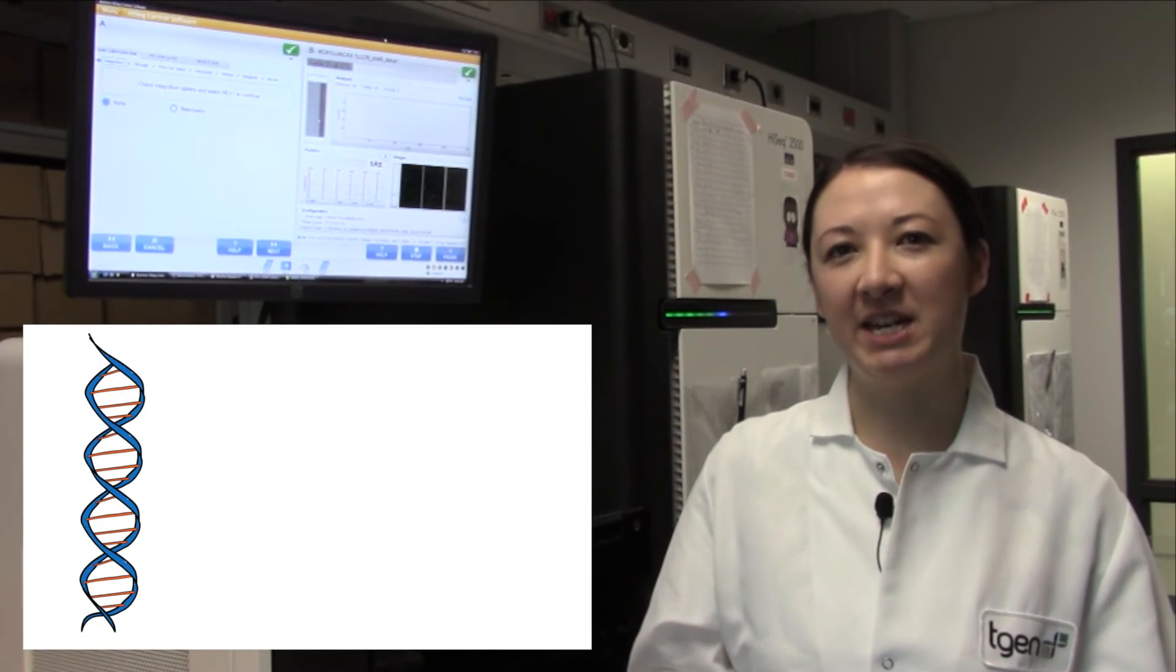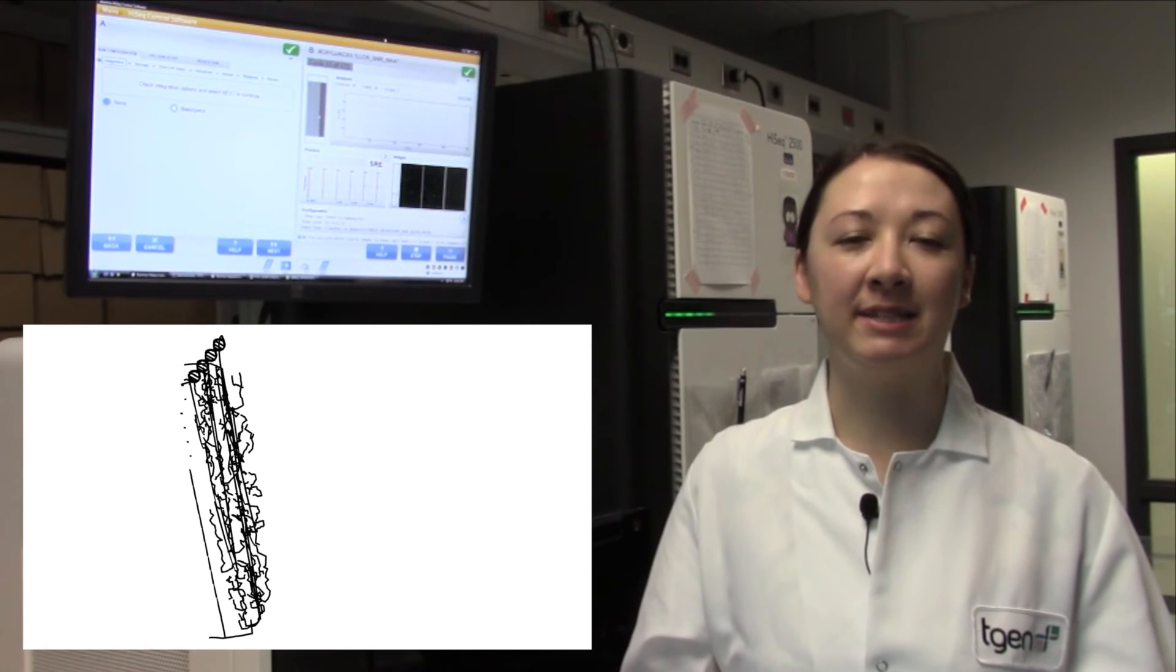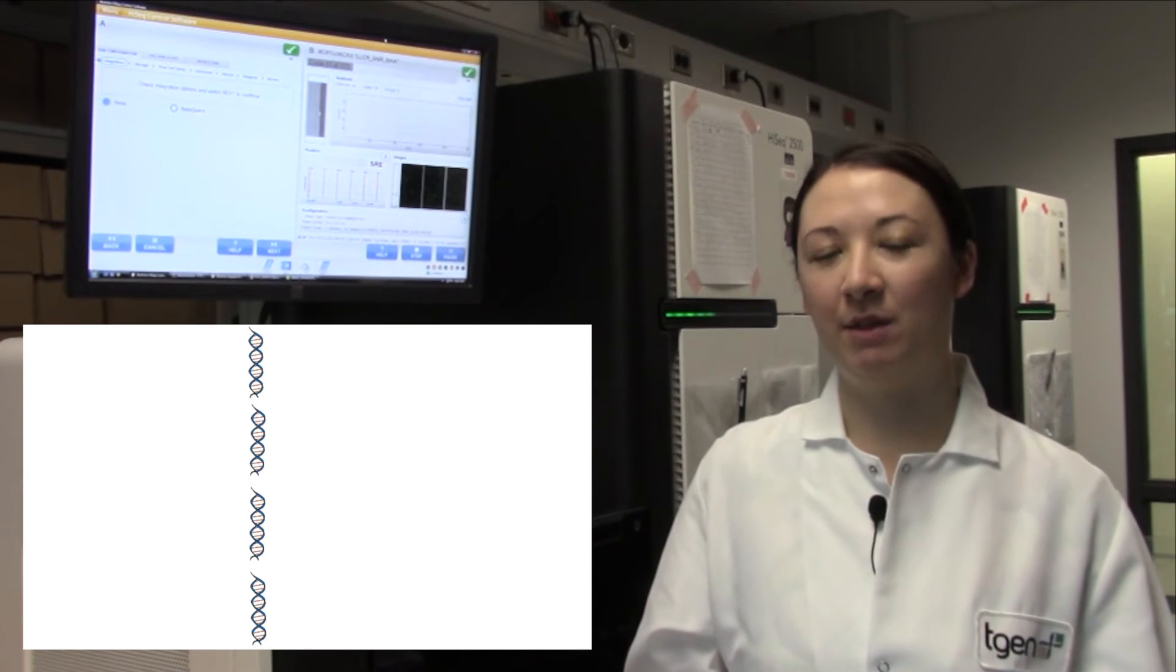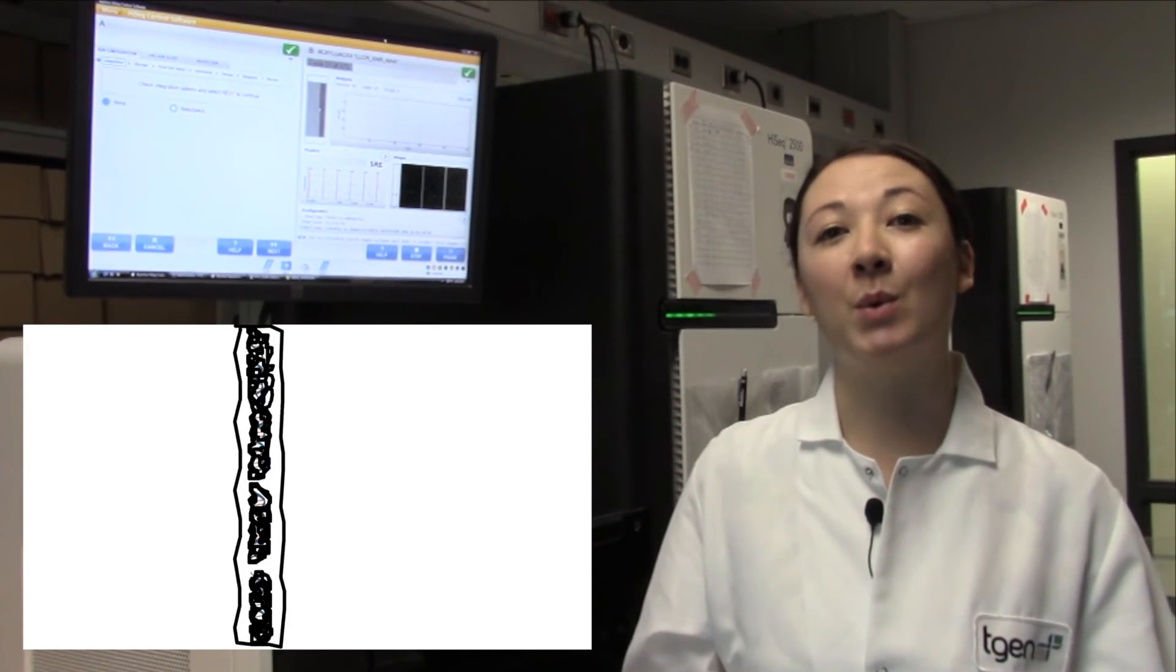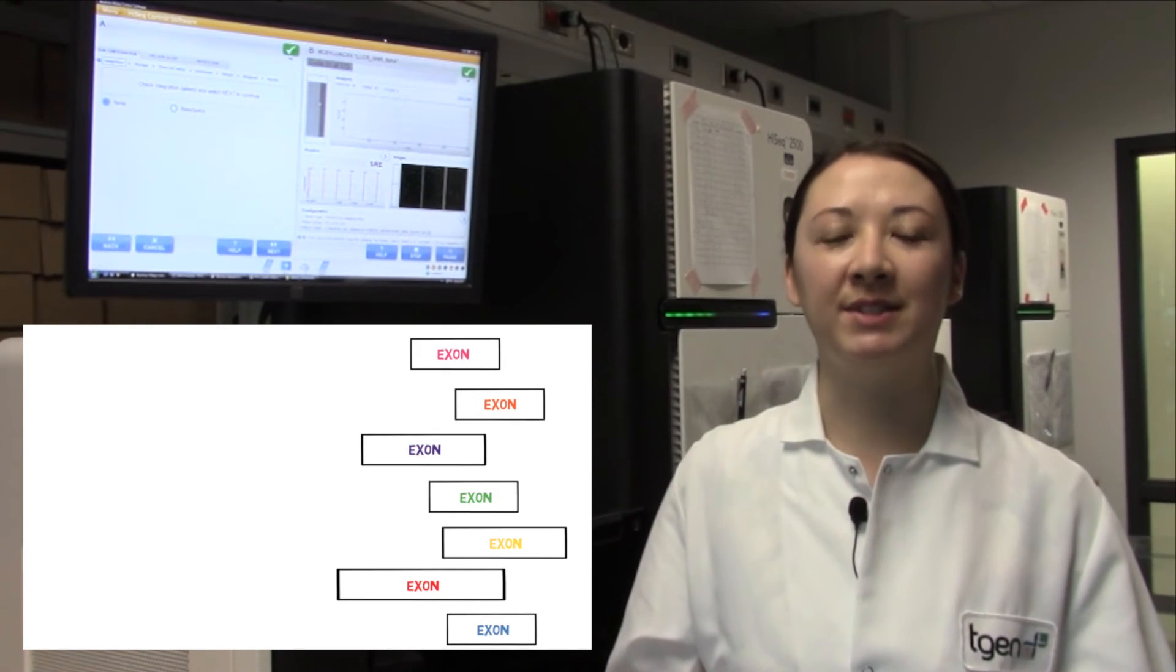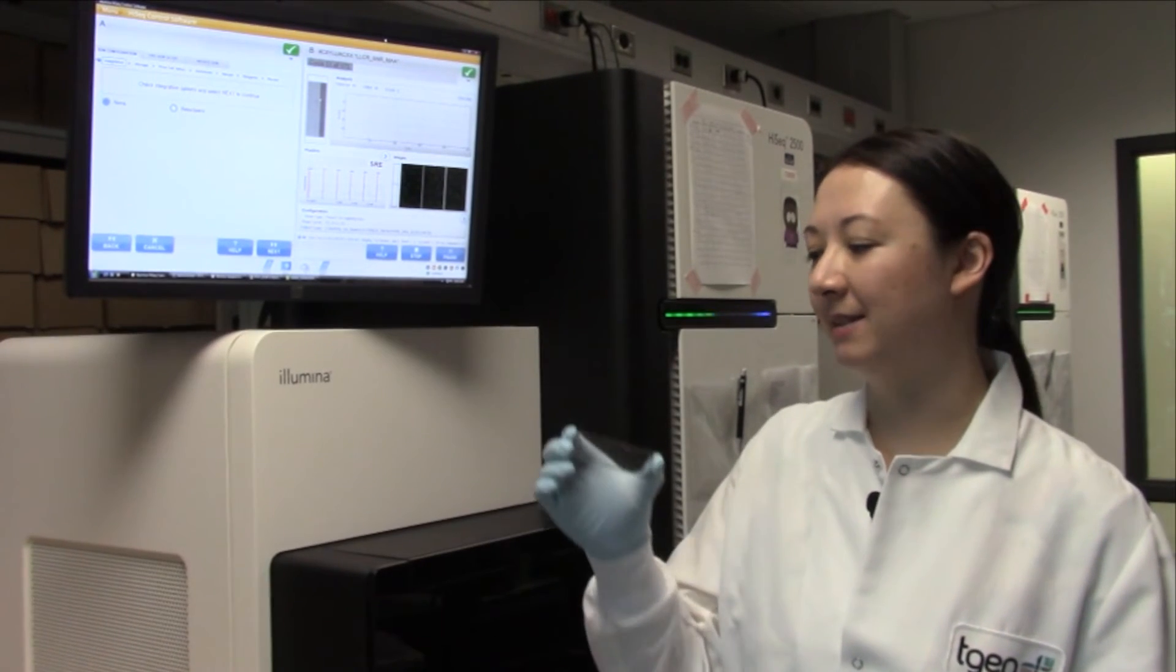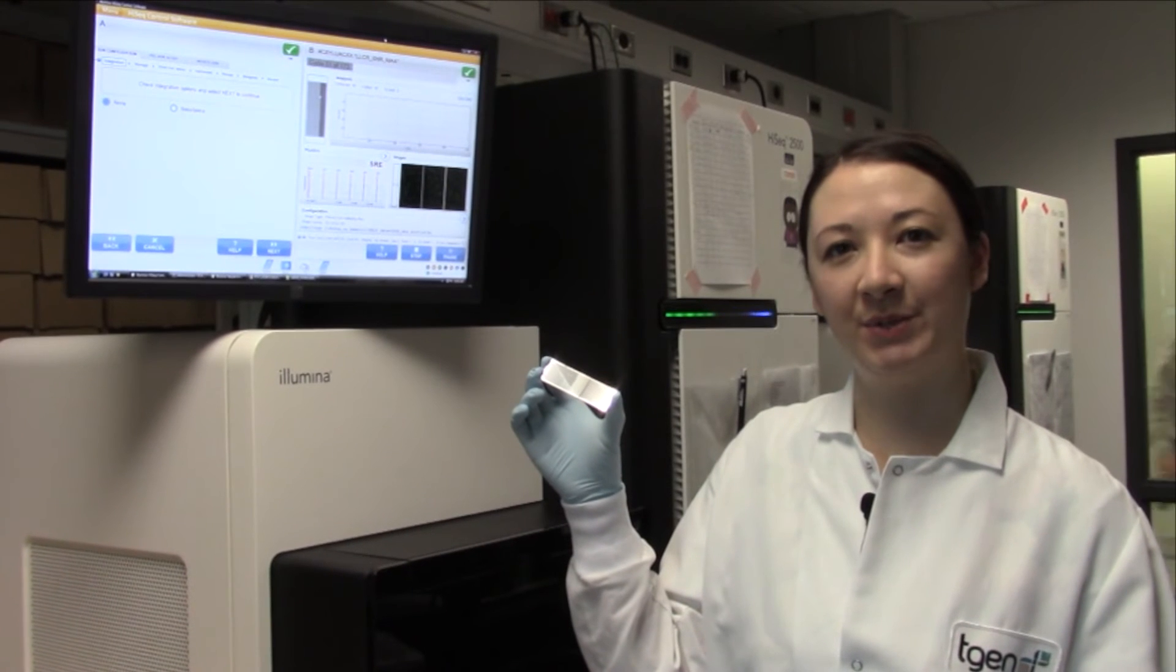We prepare the DNA for sequencing by separating out and amplifying the protein coding regions, also known as the exome. The solution is then loaded onto glass lanes in what is called a flow cell.